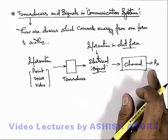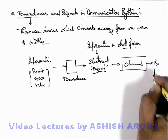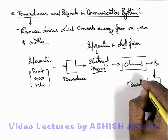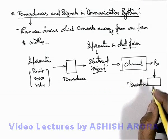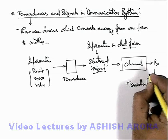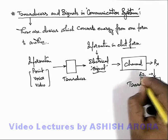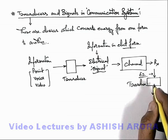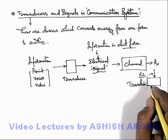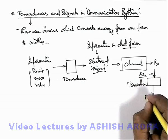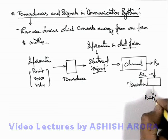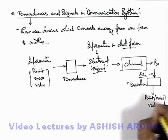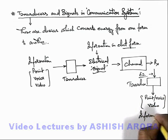The channel signal is received by the receiver, which is again fed to another transducer. This transducer converts the electrical signal. Up to this level the signals are in electrical form. Finally, the receiver transducer converts the electrical signal into the understandable form — that is print, voice, or video — for the information receiver.